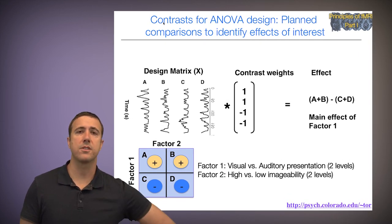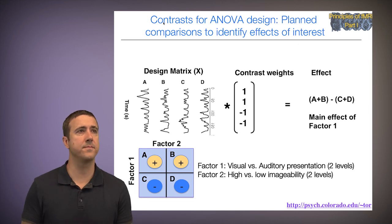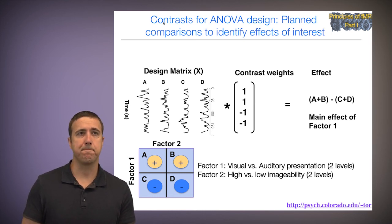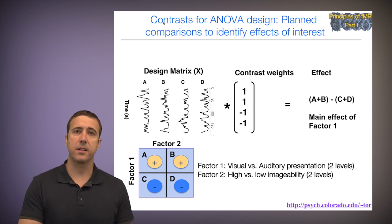Now let's use this to look at contrasts. So these are my four columns of my design matrix. And now I'm going to apply contrast weights across those four columns. I can apply the contrast 1, 1, negative 1, negative 1, which means I'm taking a linear combination that equals the parameter estimate for column A plus B minus C plus D. And you can see this graphically here down below. This is a main effect of factor 1, or visual versus auditory presentation.